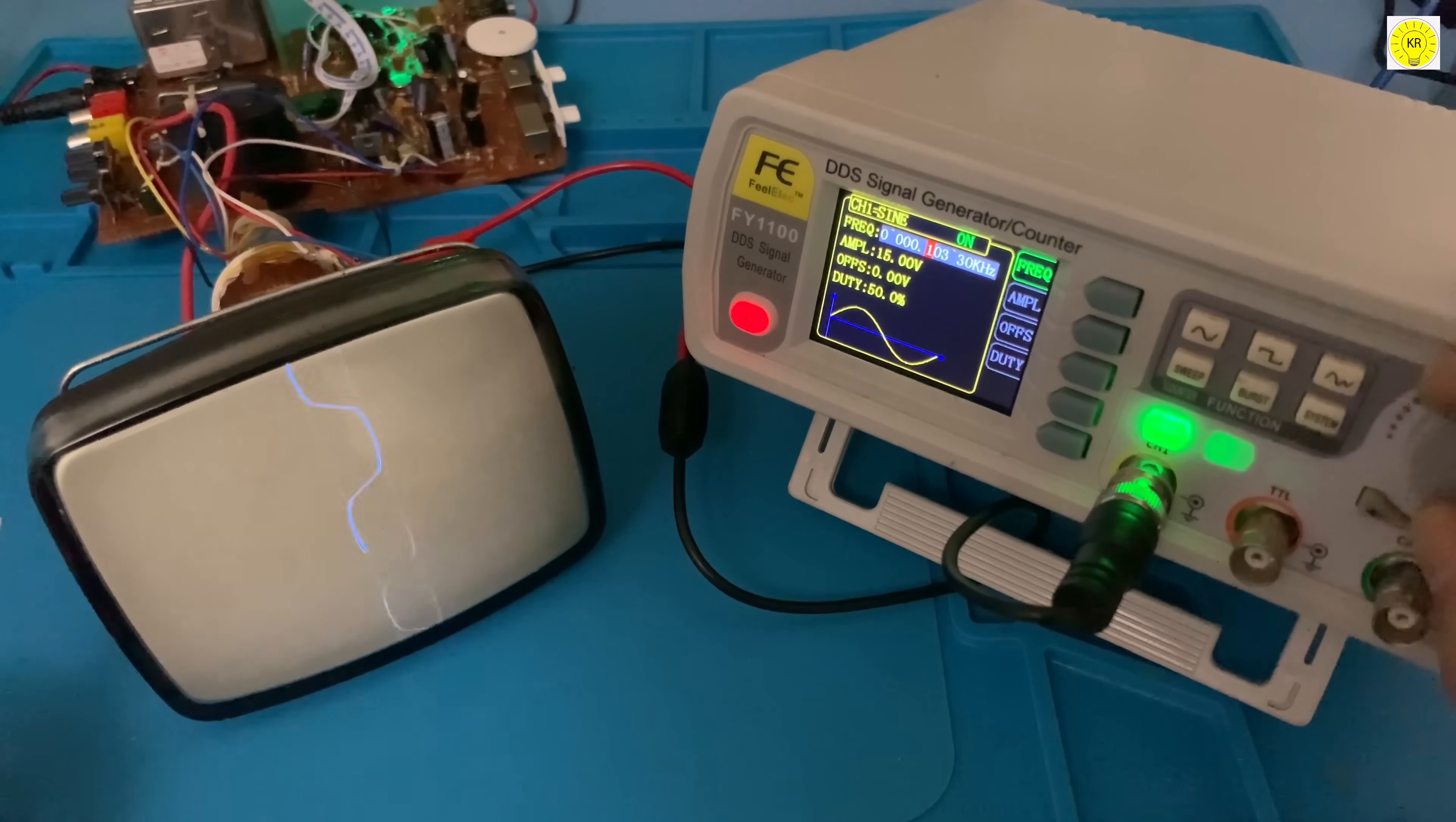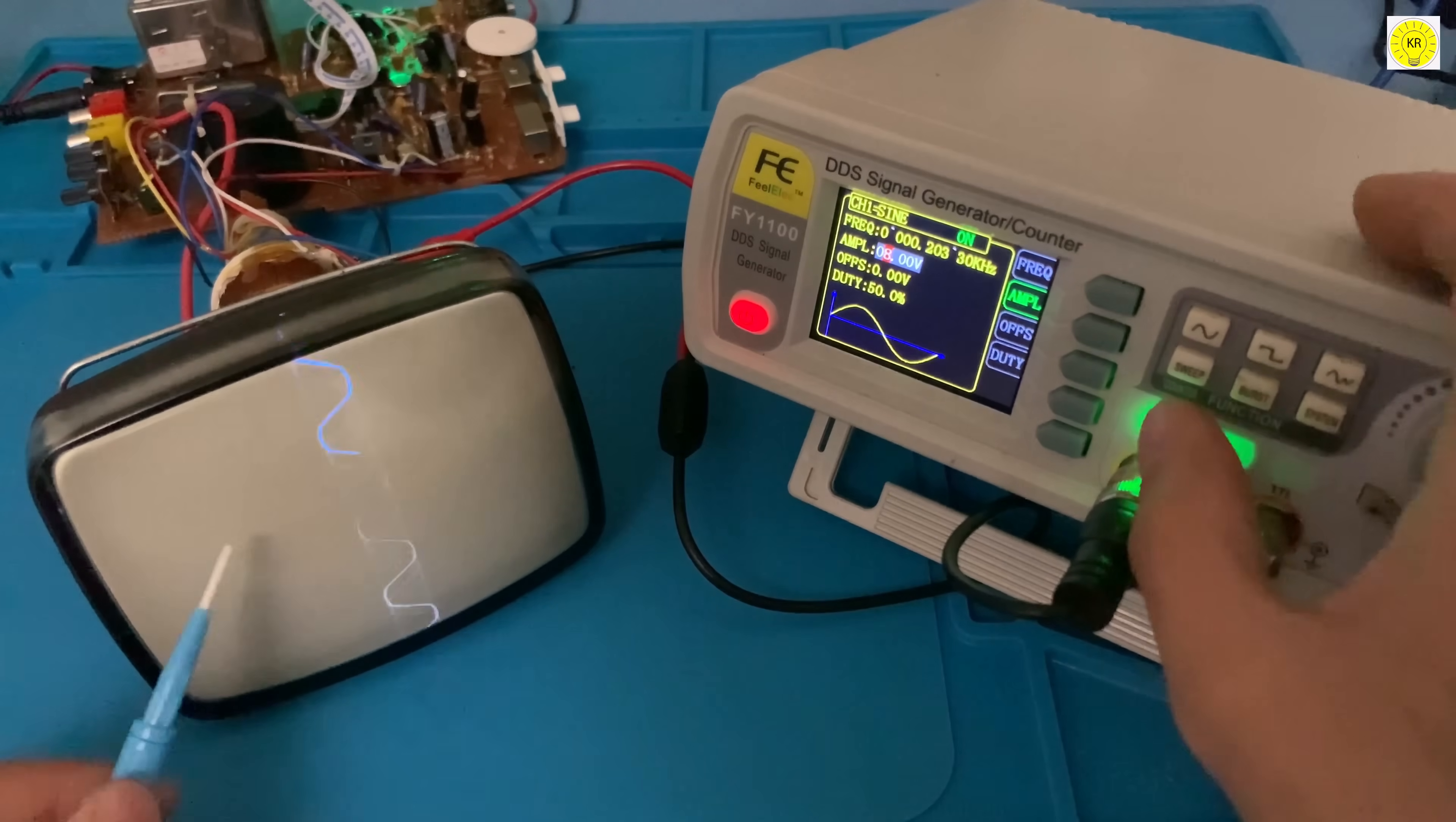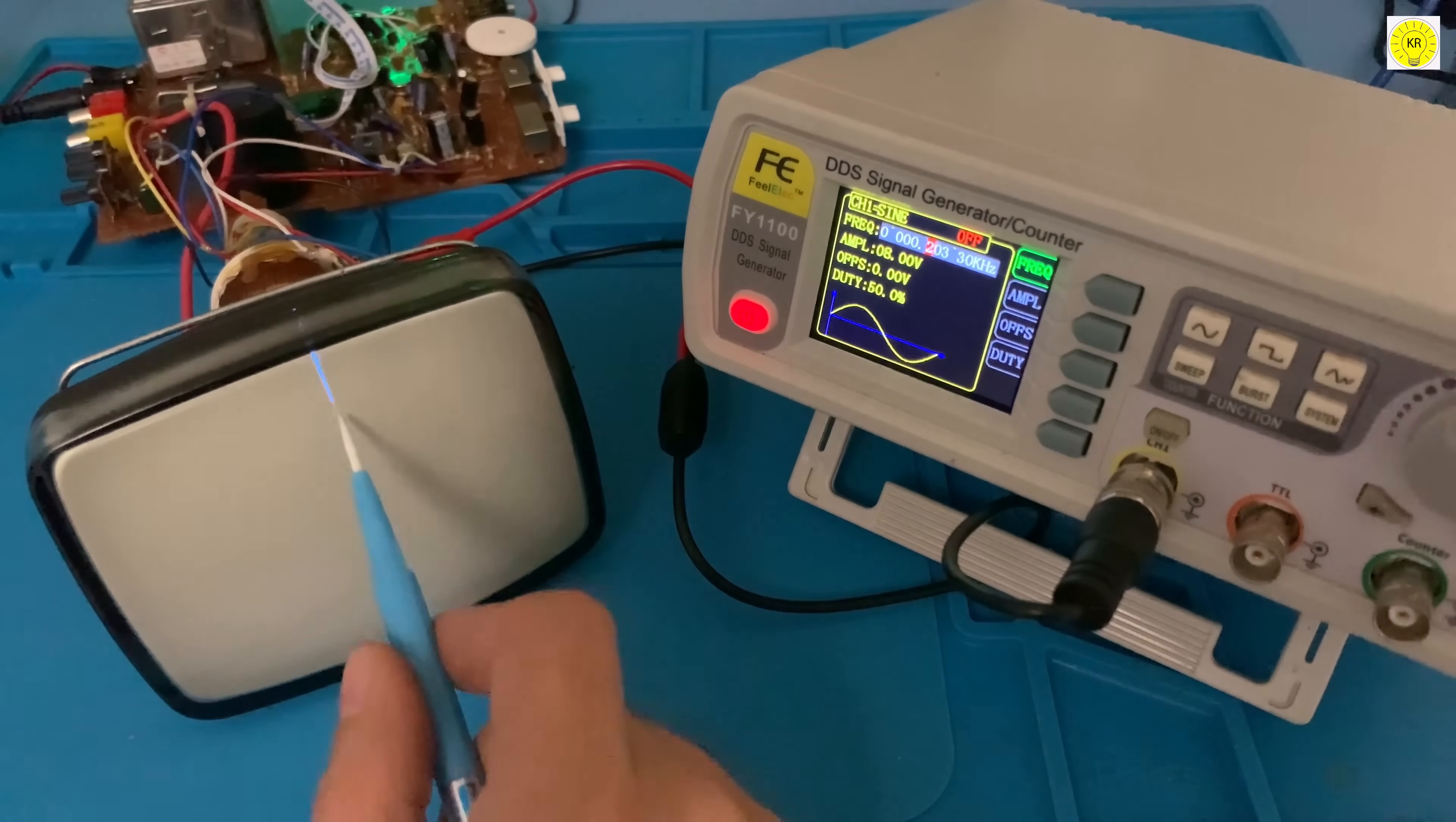But we have a simple problem here that we can solve easily. The signal appears vertically, and we are used to the appearance of the signal horizontally. So we will need some modifications to the deflection coils.